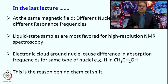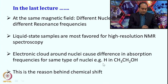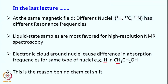We looked at how the electronic cloud around nuclei causes differences in absorption frequency for the same type of nucleus. For example, a proton in CH3 has a different electronic cloud than in CH2 or OH. Therefore, for an alcohol we have three peaks — one for CH3, one for CH2, and one for OH — with an intensity ratio of 3:2:1. This differential electronic cloud around nuclei is the reason behind chemical shift.